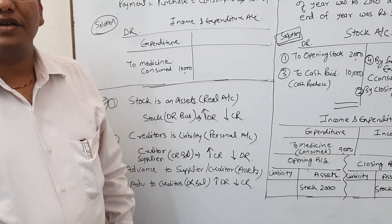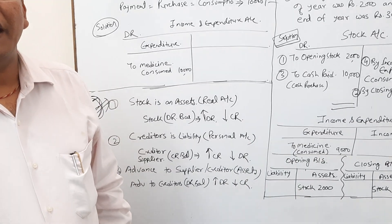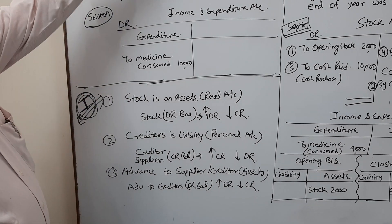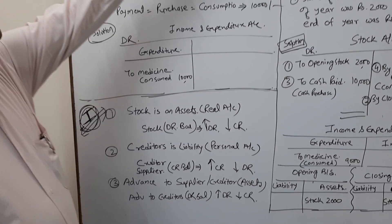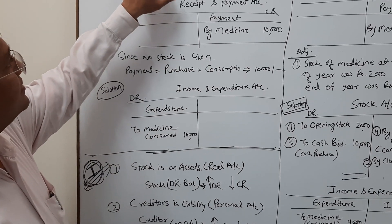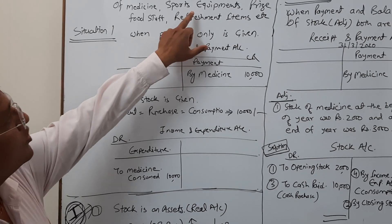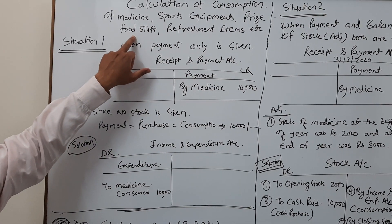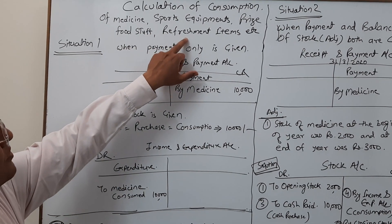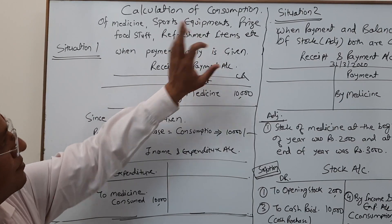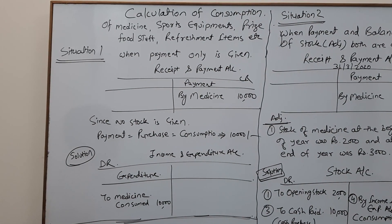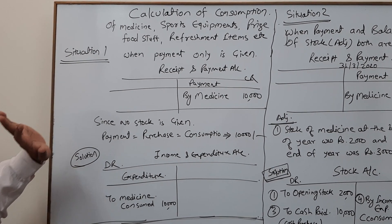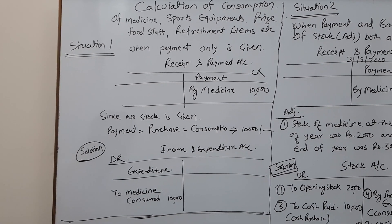In this lecture we have to discuss about calculation of consumption — calculation of consumption of medicine, sports equipment, price, food stuff, and refreshment items. We will also discuss some basic concepts related to calculation of consumption.